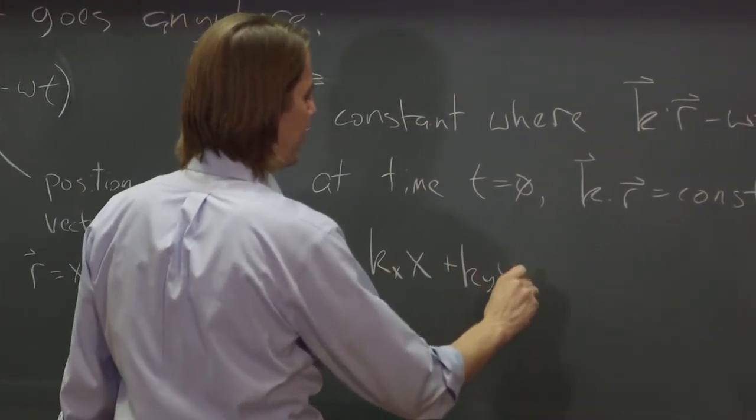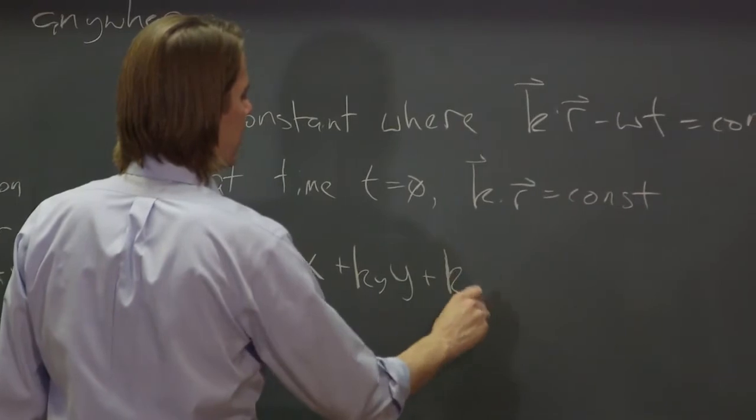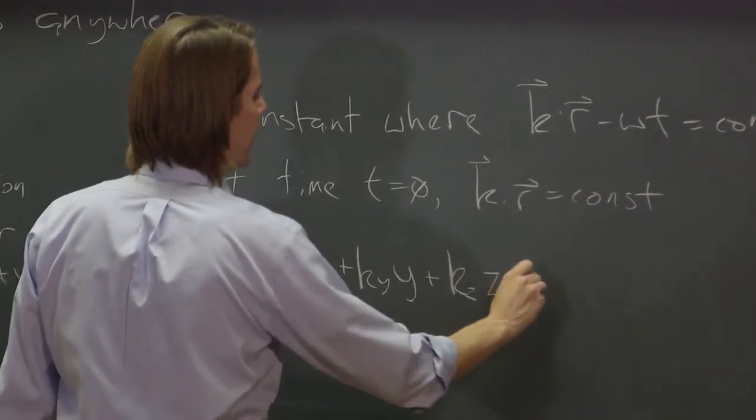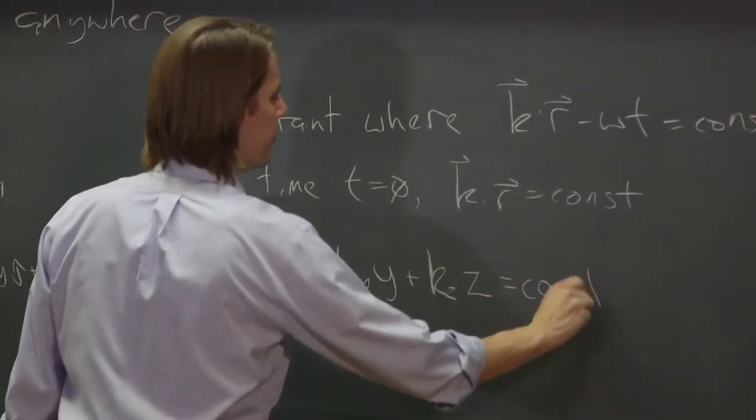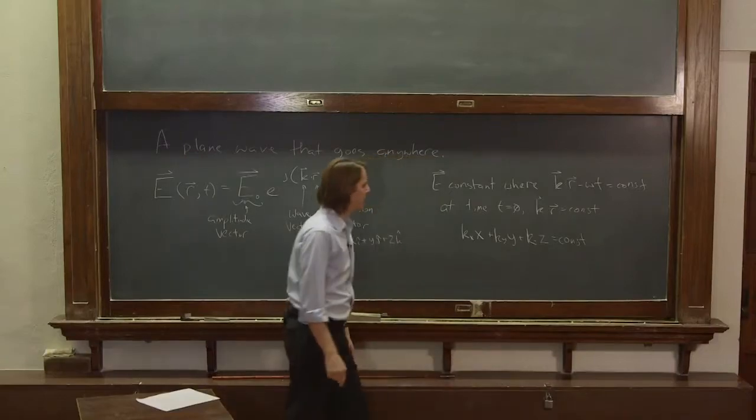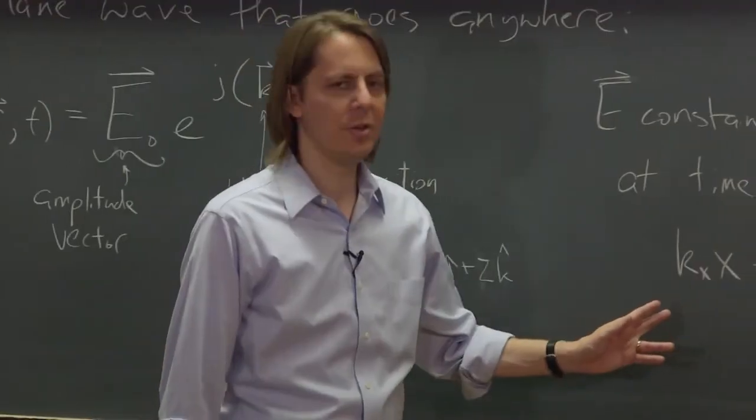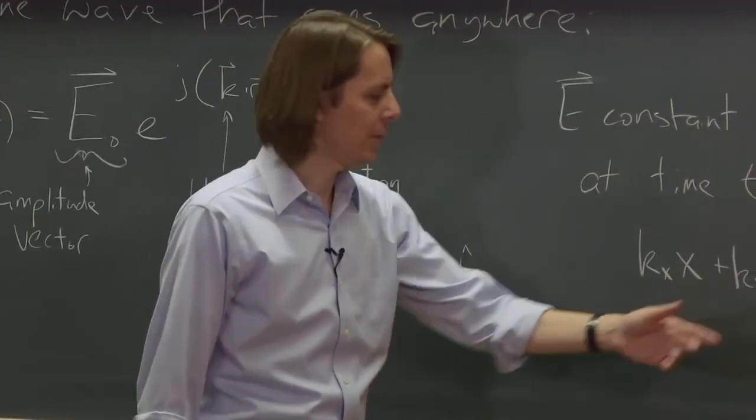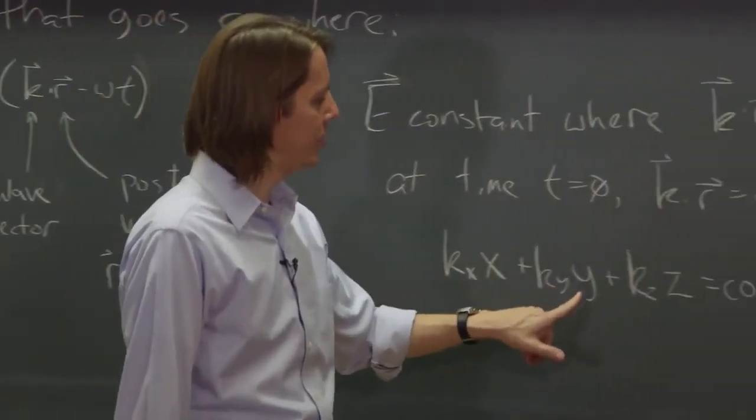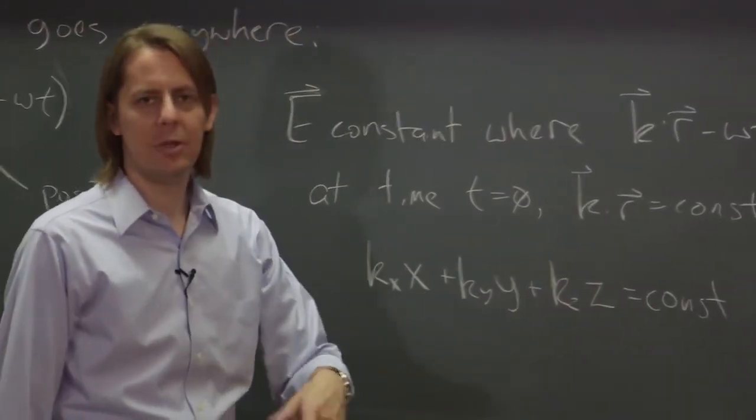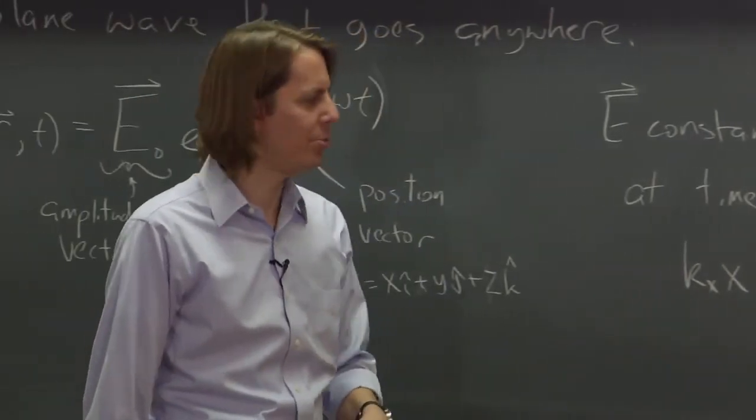So you know their dot product is the x component of k times x plus the y component of k times y plus the z component of k times z. And those have to equal a constant. And we're being very general, but we've just written the equation for a plane.